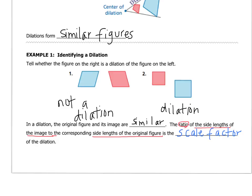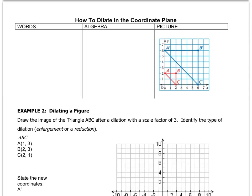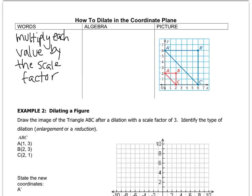Let's look at the next example and see what the scale factor is all about. In the coordinate plane, we have a shape, and what you're going to do to create the image A prime, B prime, C prime is multiply each coordinate value by the scale factor. In algebra, we call the scale factor the letter k so we don't have to write the phrase every time. The way we write it is: the coordinate point (x, y) turns into the coordinate point (kx, ky).